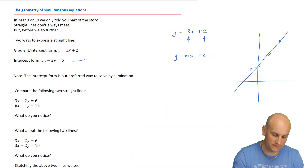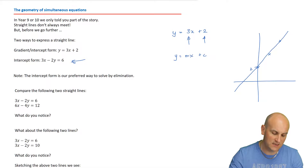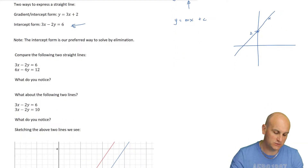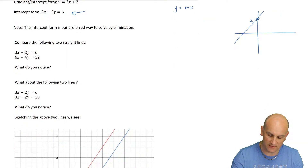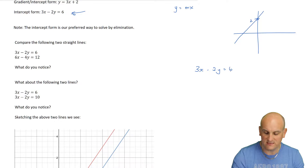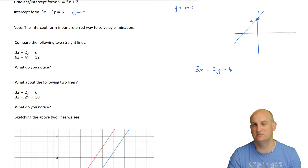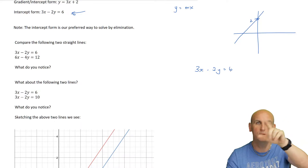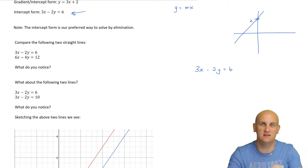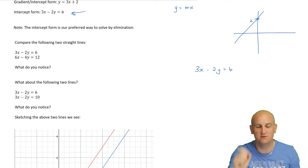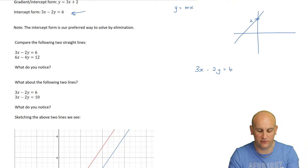The other way is intercept form, like 3x minus 2y equals 6. That's the form we tend to write our simultaneous equations in, because particularly for elimination, we put the x's underneath each other and the y's underneath each other, and it helps us solve them.